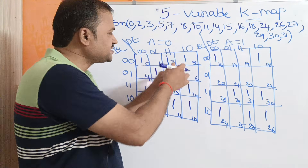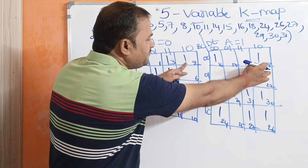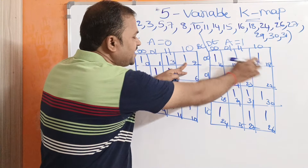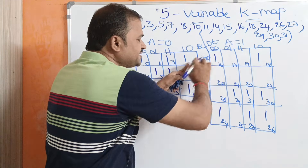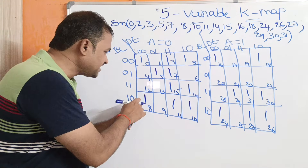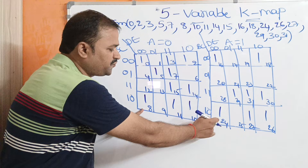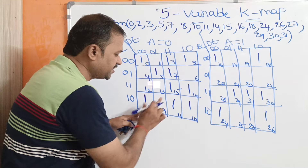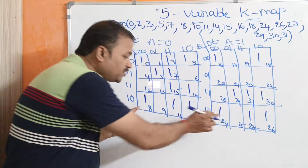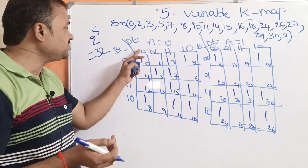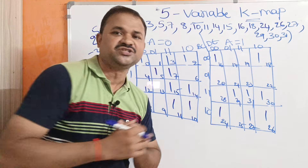Likewise, the cell representing the 2nd minterm and the cell representing the 18th minterm are adjacent cells — we can combine them into one group. Similarly, minterm 8 and minterm 24 can be combined into one group, because these two represent the same combination: BC value 1,0 and DE value 0,0 in both cases.